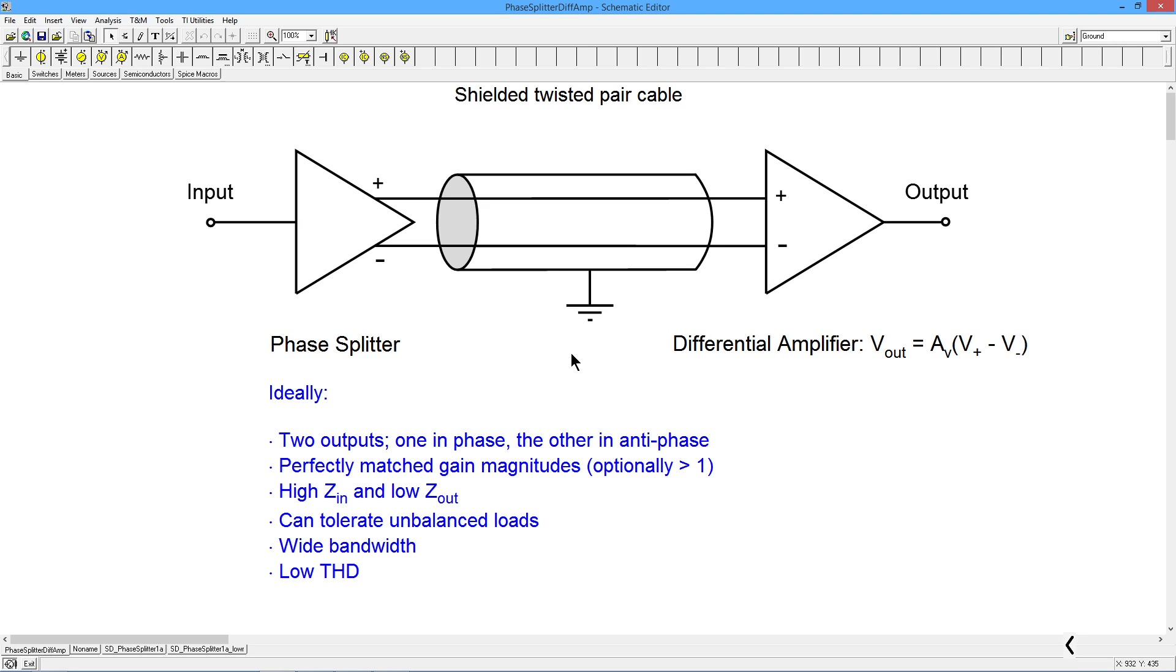So this is a really nice system to get rid of these induced noises that you have in the line. It doesn't do anything about noise back here at the input, but noise that comes in over here, very helpful. So ideally, one of these phase splitters would have the following characteristics. You'd have two outputs, one in phase, the other in an anti-phase.